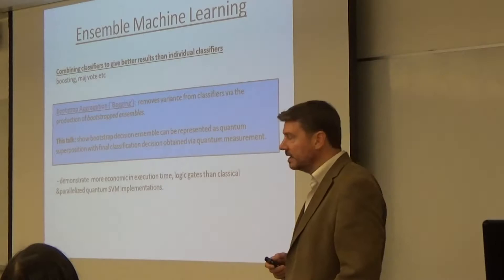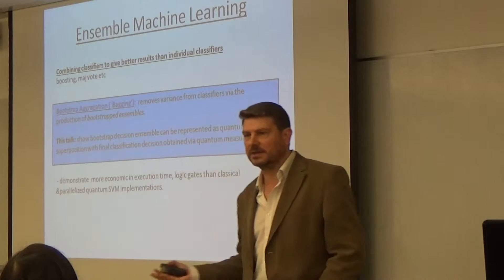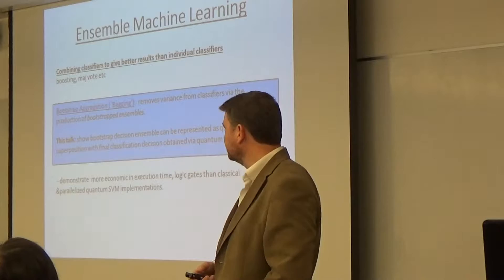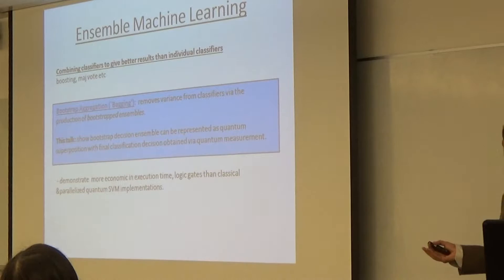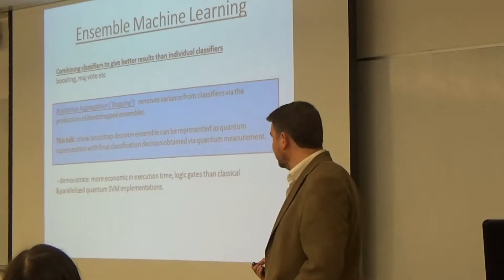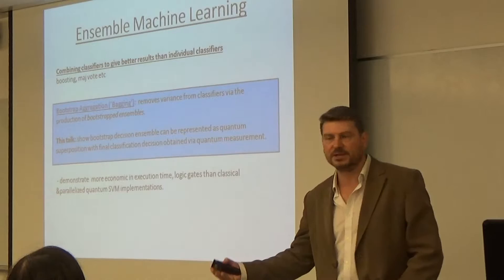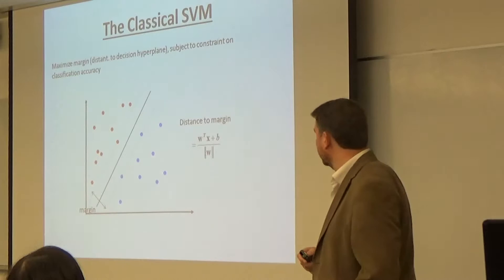Within the area of machine learning there is ensemble machine learning — the science of how one combines classifiers in order to get a better decision than you would get from the best individually performing classifier. The combination can be through any number of different methods, the simplest of which would be majority voting. What I'll be looking at here is bootstrap aggregation, or bagging for short — a method of producing bootstrapped ensembles of classifiers for decision combination, hopefully producing a better decision.